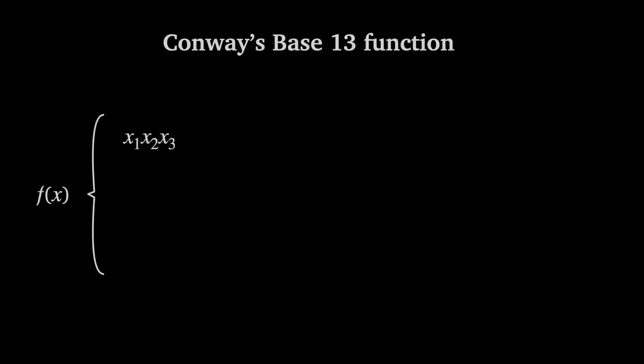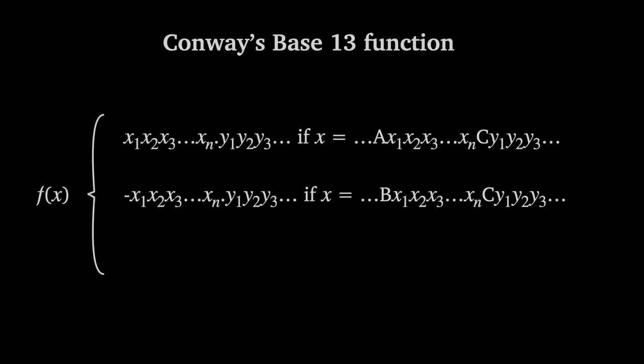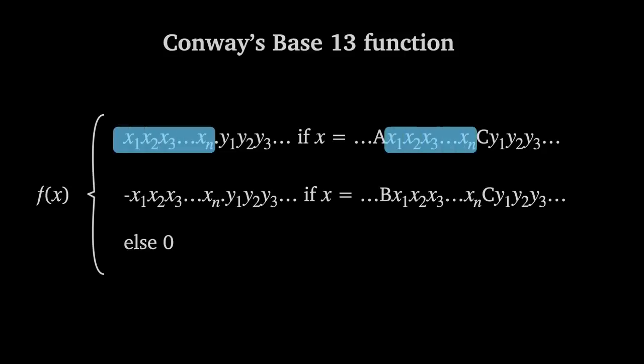The base 13 function is a conditional function, where if x is type A, we take the digits in between A and C and make them the integer part of the output, and the digits after C become the decimal part of the output. Because we defined all these digits to be 0 to 9, the output is just a regular base 10 number.